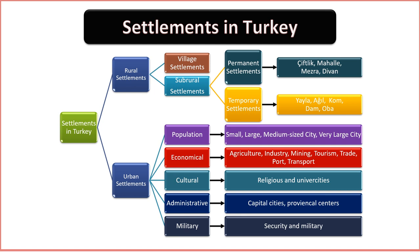2. Mass Settlements. Mass settlements in rural areas exhibit different spatial patterns: linear, circular, or grid system. Linear settlements align along a linear feature, circular settlements radiate from a central point, and grid system settlements follow an organized layout. 3. Administrative Functions. Administrative functions play a pivotal role in rural classifications. Villages are governed by a headman or mayor, while sub-village settlements lack a designated headman. Further categorization considers the duration of use, distinguishing between permanent and temporary village settlements.